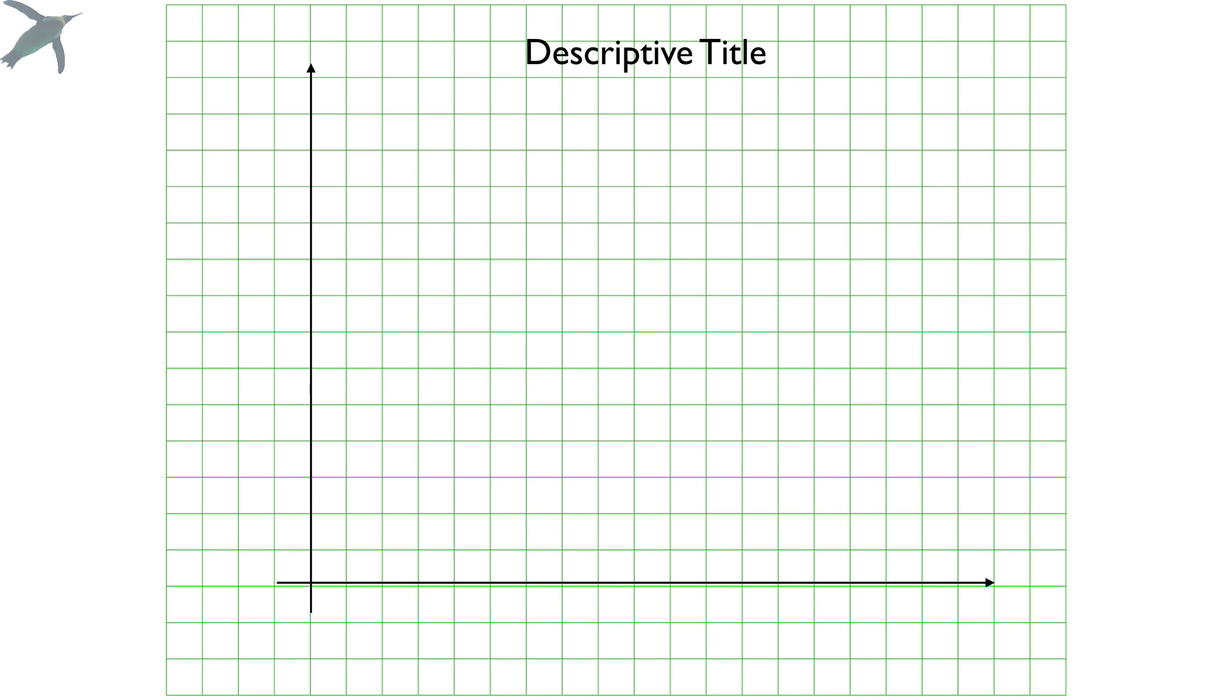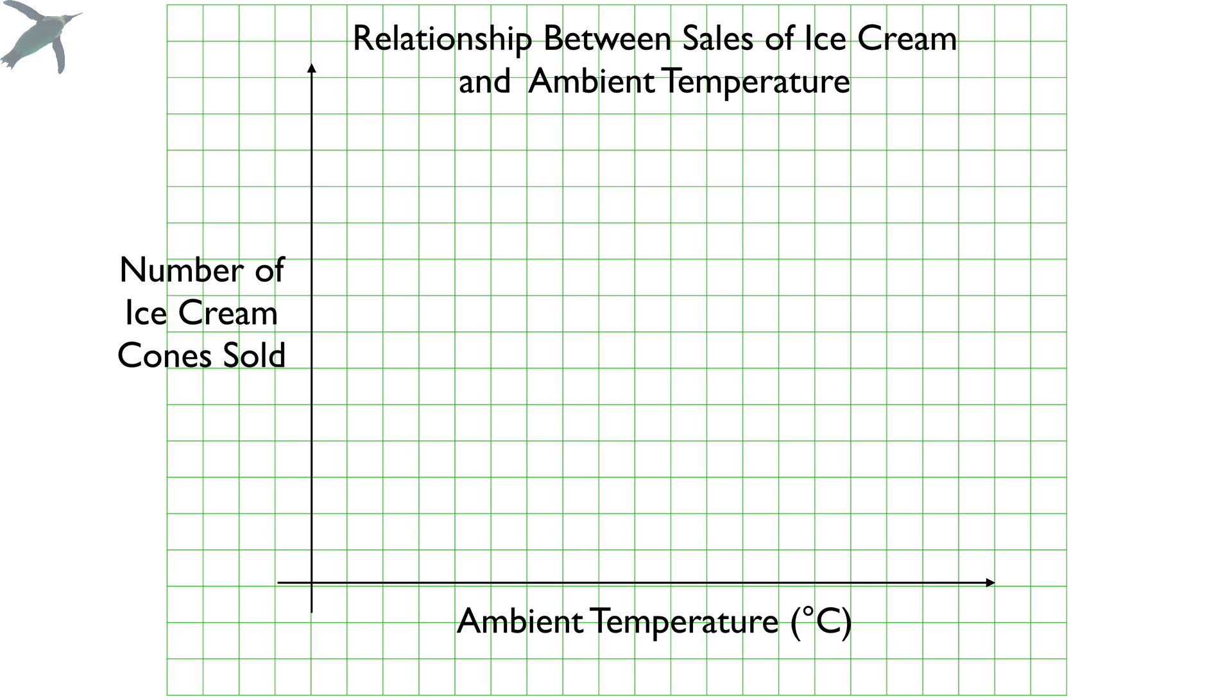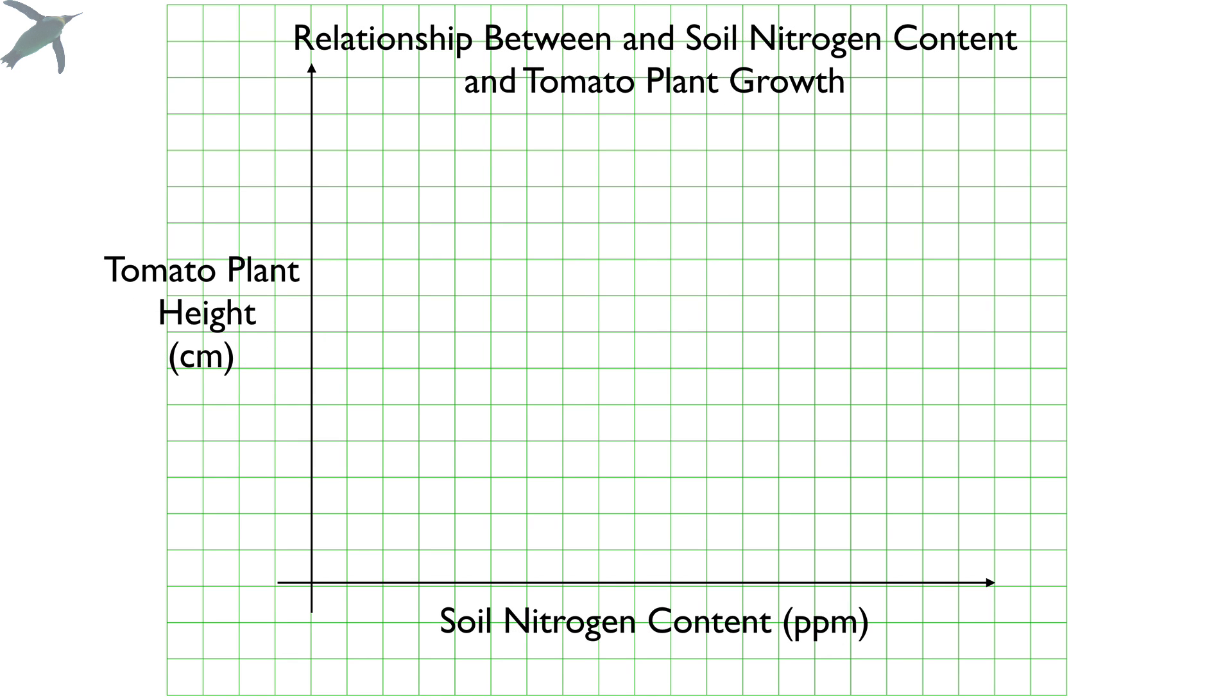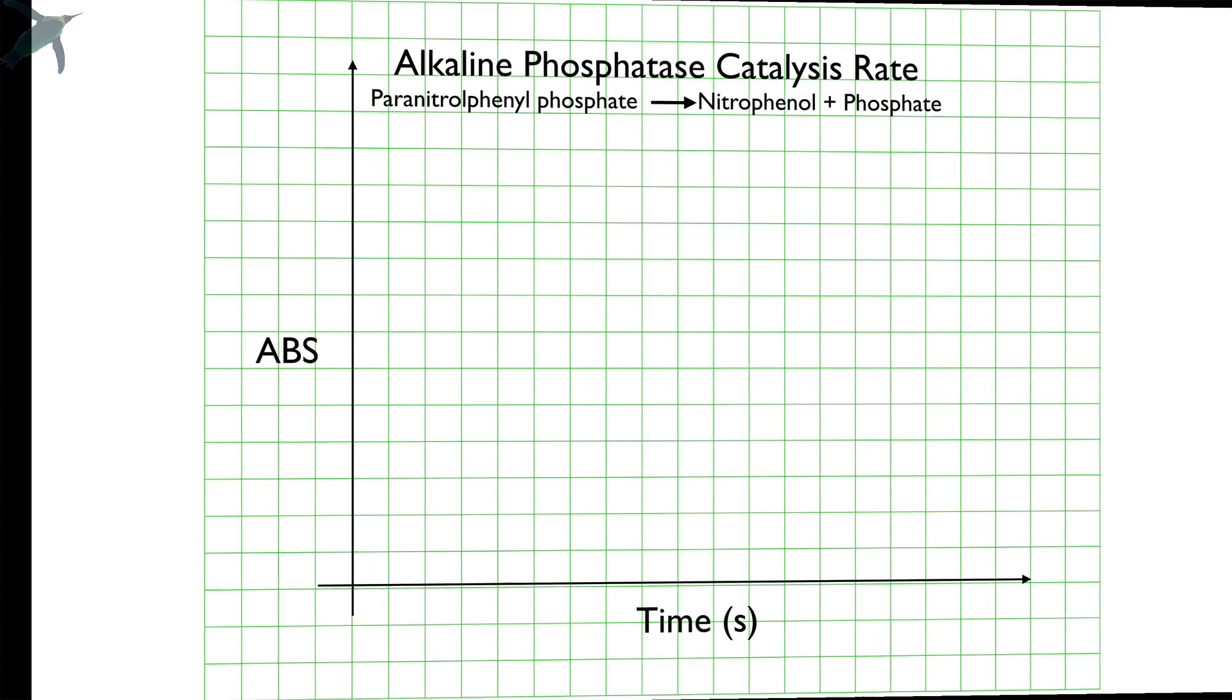So which axis is which? And what do you plot on each one? The x-axis is where the independent variable goes. That is the thing that changes or the thing you are manipulating. The y-axis is the dependent variable. That is the thing you are measuring. So some examples will probably be helpful here. The relationship between the sales of ice cream and ambient temperature. So as the temperature changes, how many ice cream cones do you sell? The relationship between soil nitrogen. How much nitrogen is in the soil and how tall did the tomato plants get? And as you look at the change in absorbance, you're actually looking at the production of product in a reaction that is catalyzed by the enzyme alkaline phosphatase. So absorbance is what you're measuring. That goes on the y. And time is on the x.